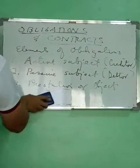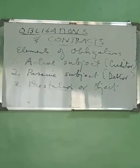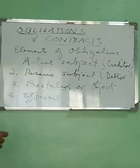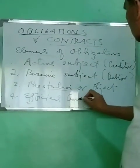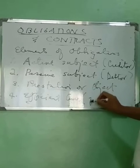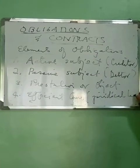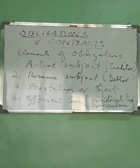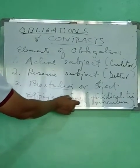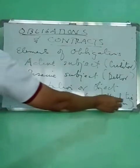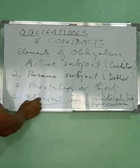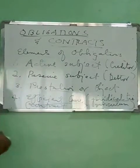The fourth element is what we call the efficient cause. The efficient cause is the reason why there is an obligation. This is the juridical tie, otherwise known as the vinculum — the tie between the contracting parties who constituted the obligation. Usually, the efficient cause would be in the form of a contract.